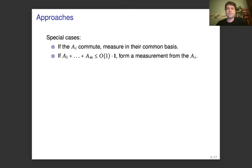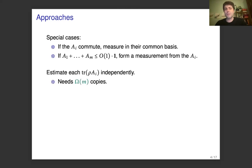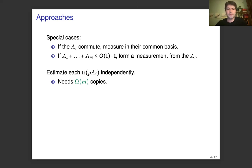There are a few special cases. If the observables commute, then we can measure in their common basis and essentially emulate the classical case. Or if they form a measurement, or if their sum is bounded above by some constant times the identity, then we can form a measurement from them by normalizing and get to the classical case. But in general, one thing we could do is to try to estimate each of their probabilities independently. However, because there are m events, this requires m copies of rho at least. In the classical case, we saw that this should be possible with something closer to log m samples, so we would expect something polylog in m and d as an efficient solution.